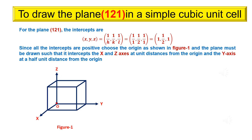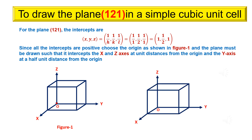For the plane (1 2 1), the intercepts are x, y, z equals 1, 1/2, 1. Since all the intercepts are positive, choose the origin as shown in figure 1. Then draw the plane such that it intercepts the x and z axes at unit distances from the origin and the y axis at a half unit distance from the origin.